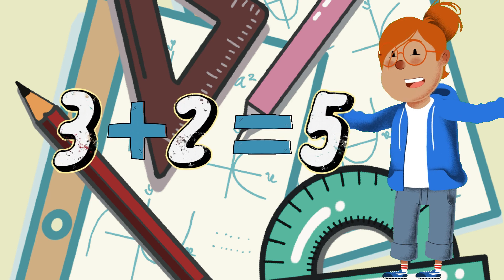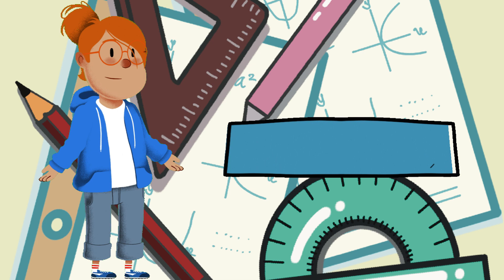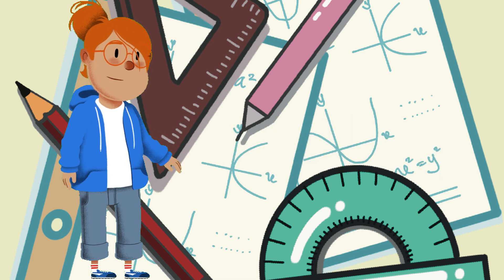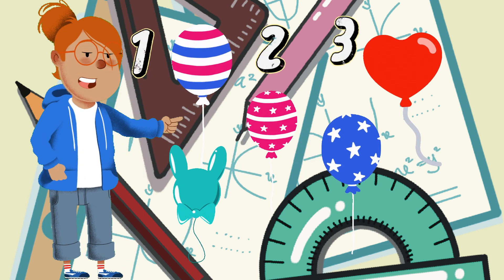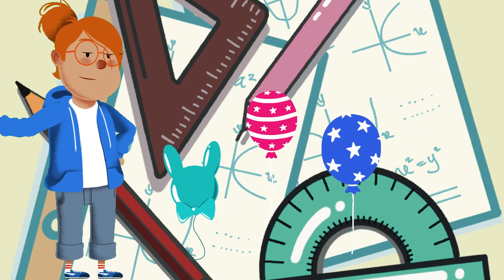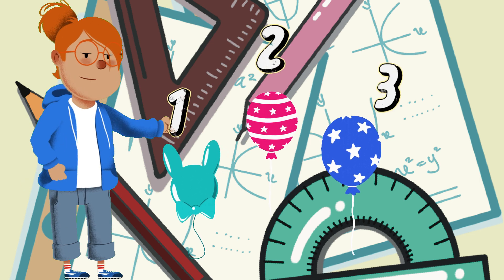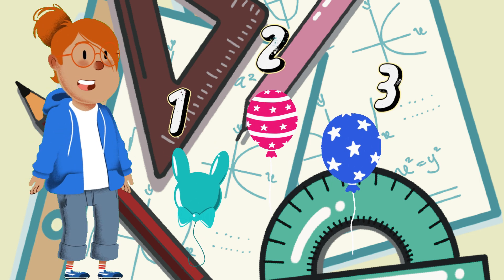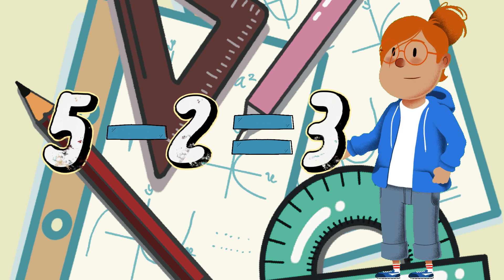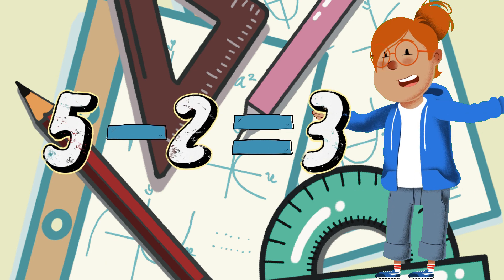Next, let's learn about subtraction. Subtraction is when we take something away from a group. It helps us find out how many are left. Imagine you have five balloons and you give away two of them. How many balloons do you have left? Let's see: one, two, three. You have three balloons left. Fantastic! Subtraction helps us figure out what remains after taking some away.